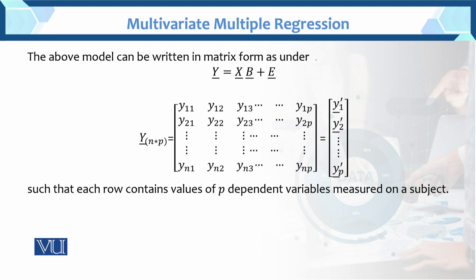The above model can be written in matrix form. All letters are now capital because everything is in matrix form. The model is Y = XB + E, where beta is now written as B (a matrix), and the error term is replaced by capital E (also a matrix). Y has order n × p: n observations and p dimensions. The Y matrix contains y11, y21, ..., yn1 in the first column, y12, y22, ..., yn2 in the second column, up to y1p, y2p, ..., ynp in the last column — so n rows and p columns, making it an n × p matrix.